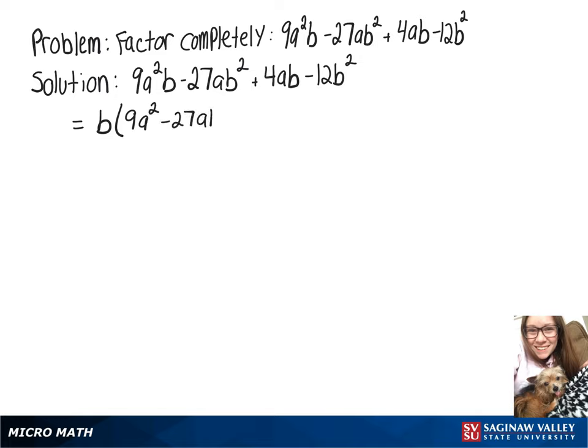So we'll have b times (9a² - 27ab + 4a - 12b). Now we'll do our grouping and split that part up: b times ((9a² - 27ab) + (4a - 12b)).